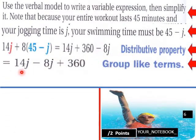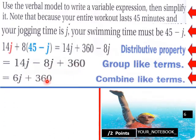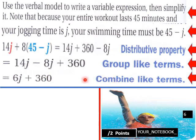Using the distributive property, this equals 14J plus 360 minus 8J. We group like terms, moving 14J minus 8J plus 360, and when we combine like terms we end up with 6J plus 360. So 14J minus 8J is 6J plus 360.